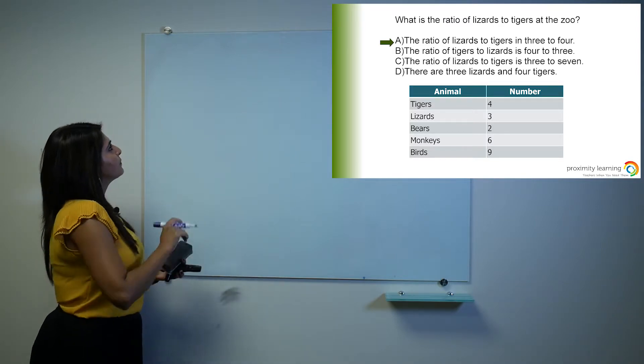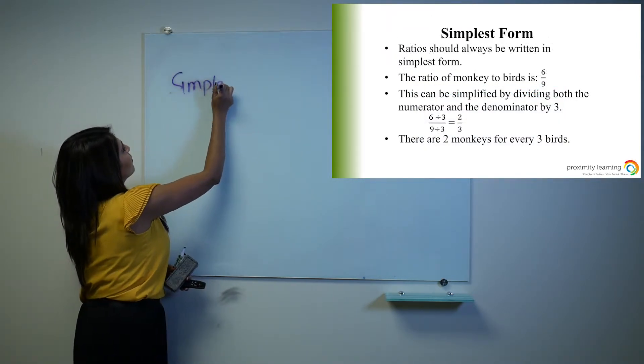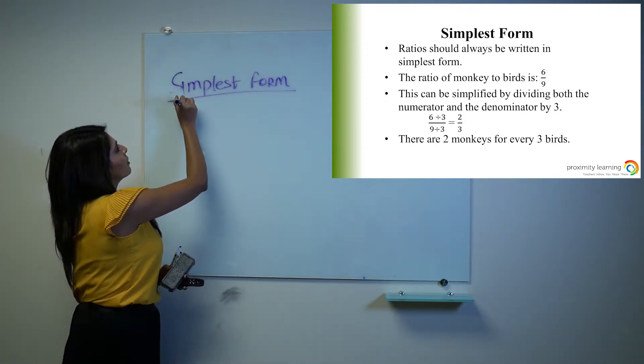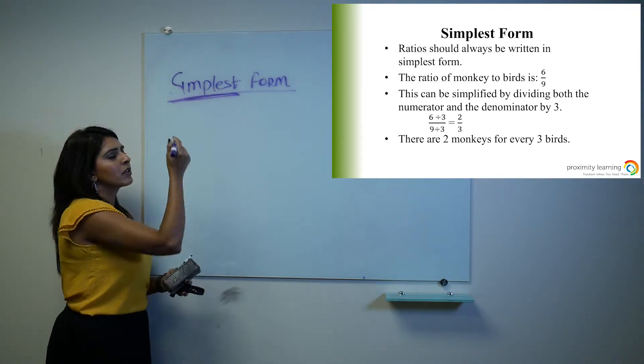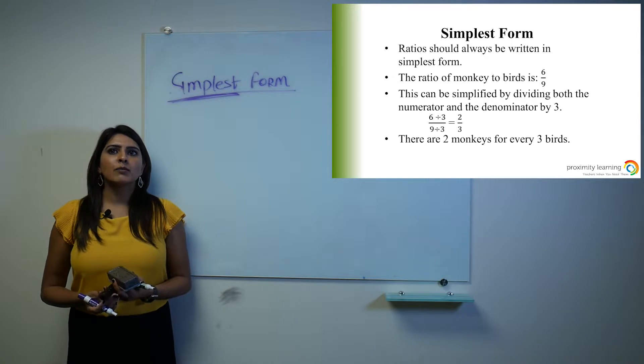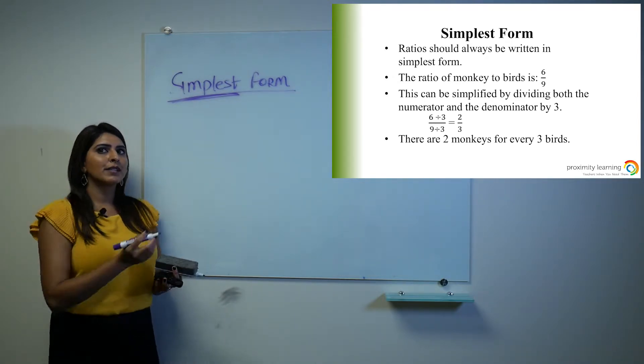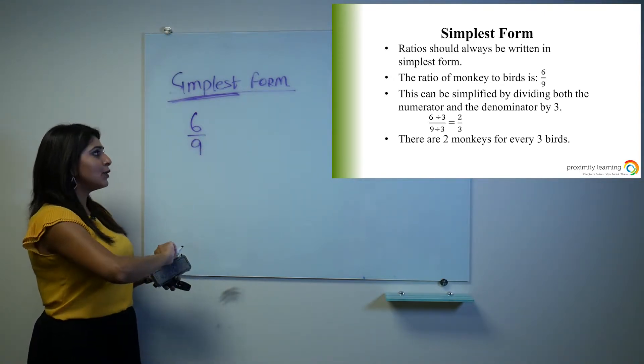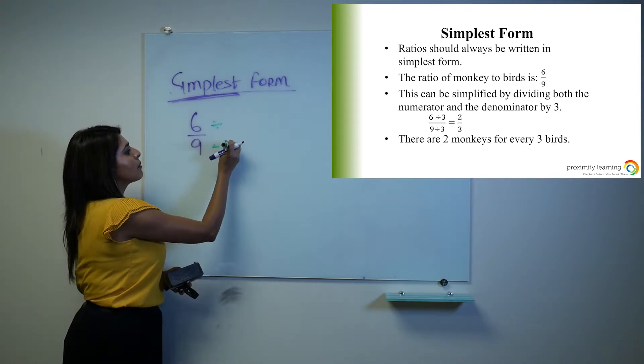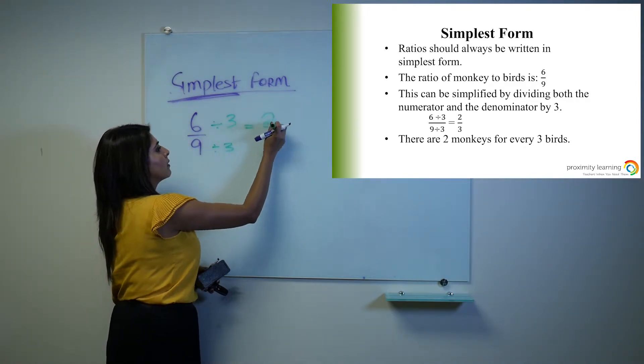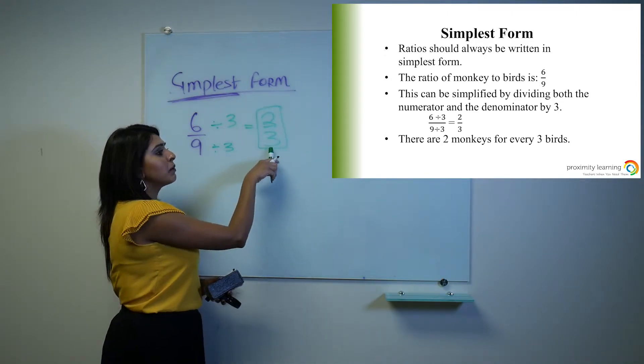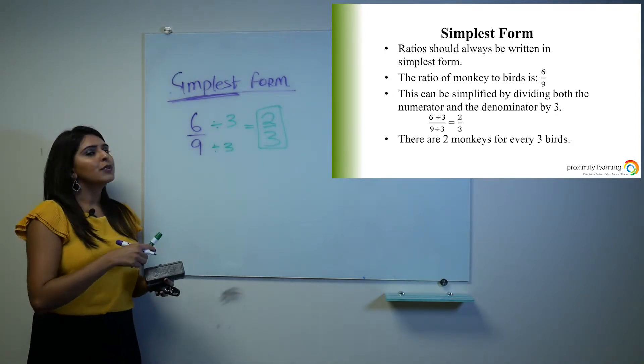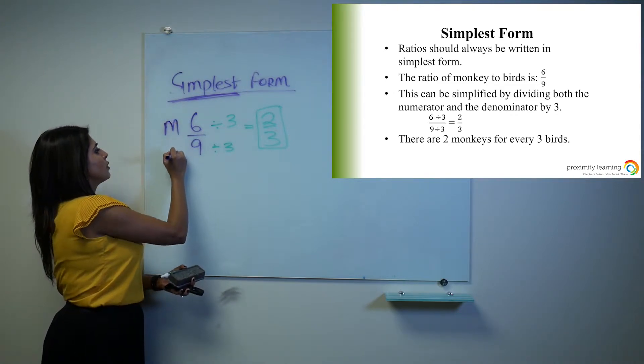Simplest form. This is very important when solving ratios. Simplest form, just like the term hints, is the simplified version of your answer. Let's say the ratio of monkeys to birds is 6 to 9. Can you simplify this? Yes, you can. How do you simplify it? Divide them both with the exact same number. The final answer that you should be able to see in a multiple choice question or anywhere else, or the way you should write it as a final answer, is 2 to 3.